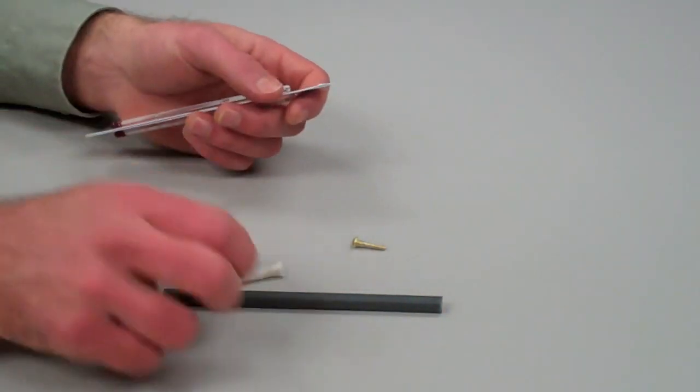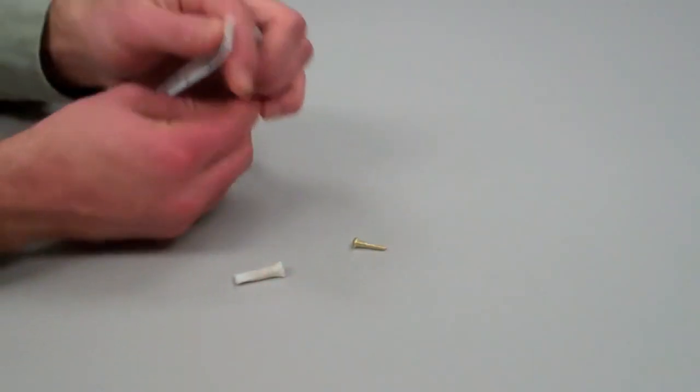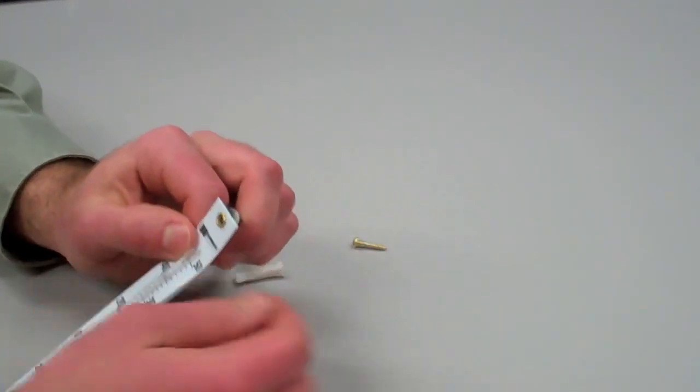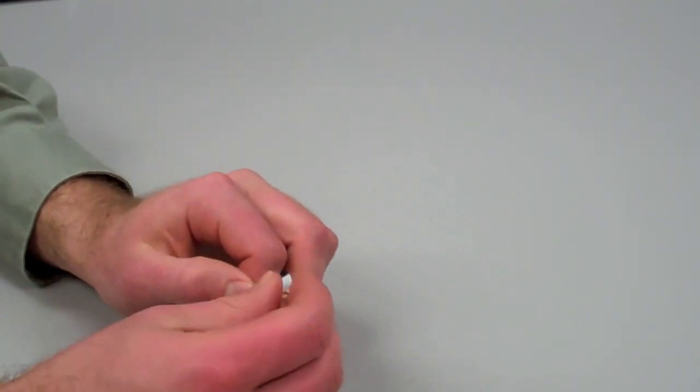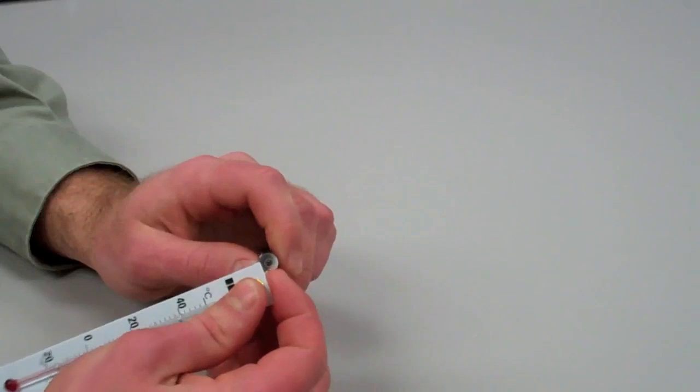To assemble your sling psychrometer, attach the two thermometers through the hole in the top of the plastic with the screw that is provided.